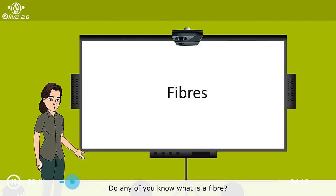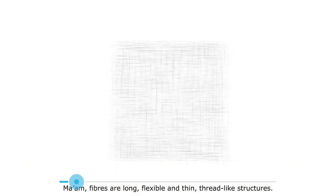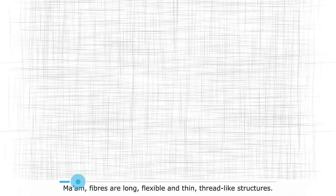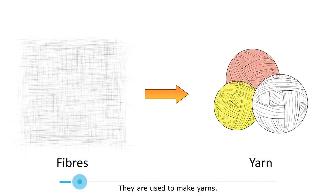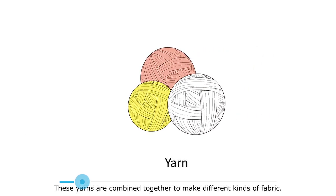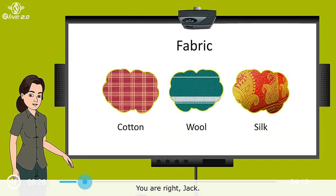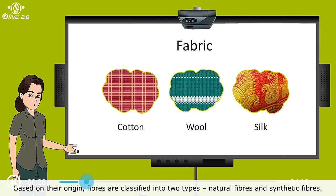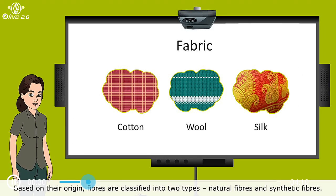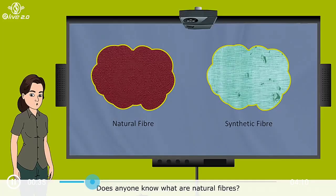Do any of you know what is a fibre? Fibres are long, flexible and thin, thread-like structures. They are used to make yarns. These yarns are combined together to make different kinds of fabric. You are right, Jack. Based on their origin, fibres are classified into two types: natural fibres and synthetic fibres.